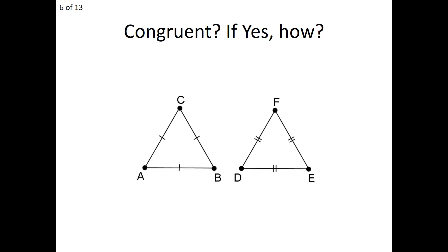How about these two triangles, triangle ABC and triangle DEF? A lot of students' gut feeling is to say yes because they look congruent. We can't say that. The three sides of triangle ABC are equal to each other, and the three sides of triangle DEF are equal to each other, but are they equal to each other across triangles? We don't know — this could be three, and this could be seven. Would those be congruent triangles? We simply don't know. So this would be NEI — not enough information to prove those two triangles are, in fact, congruent.